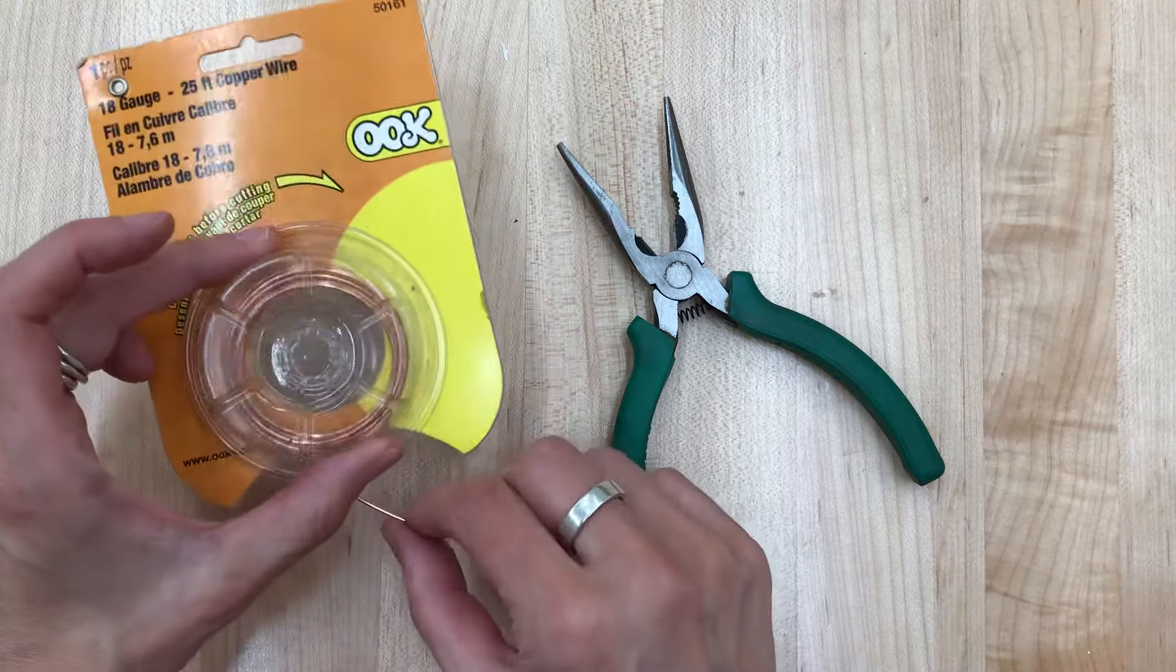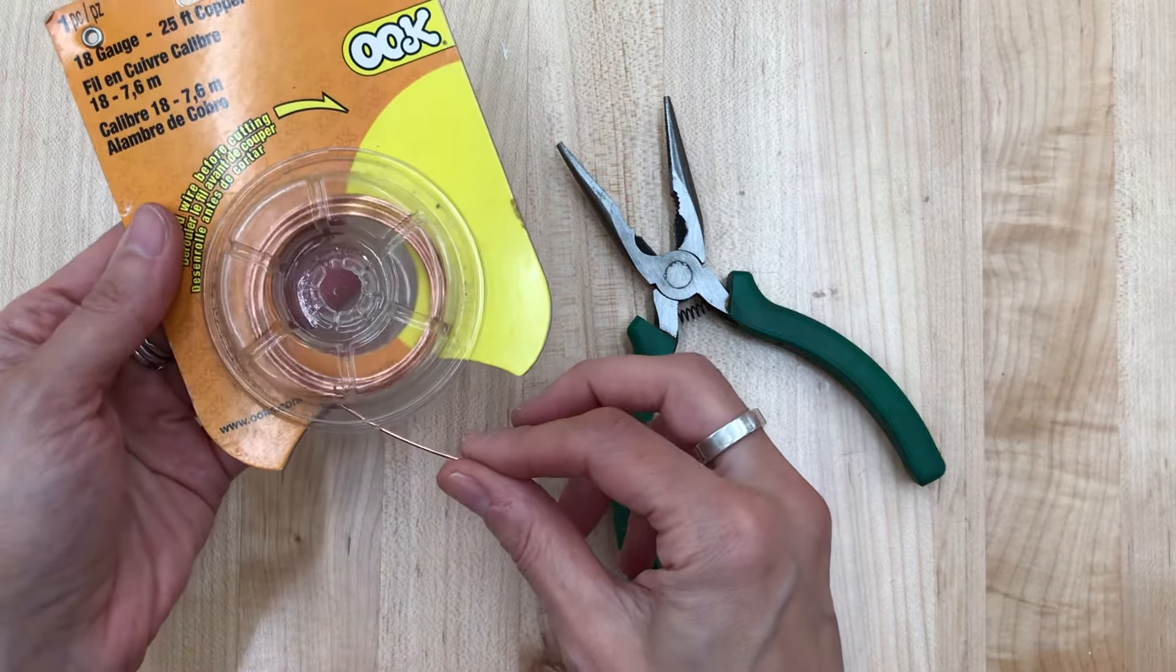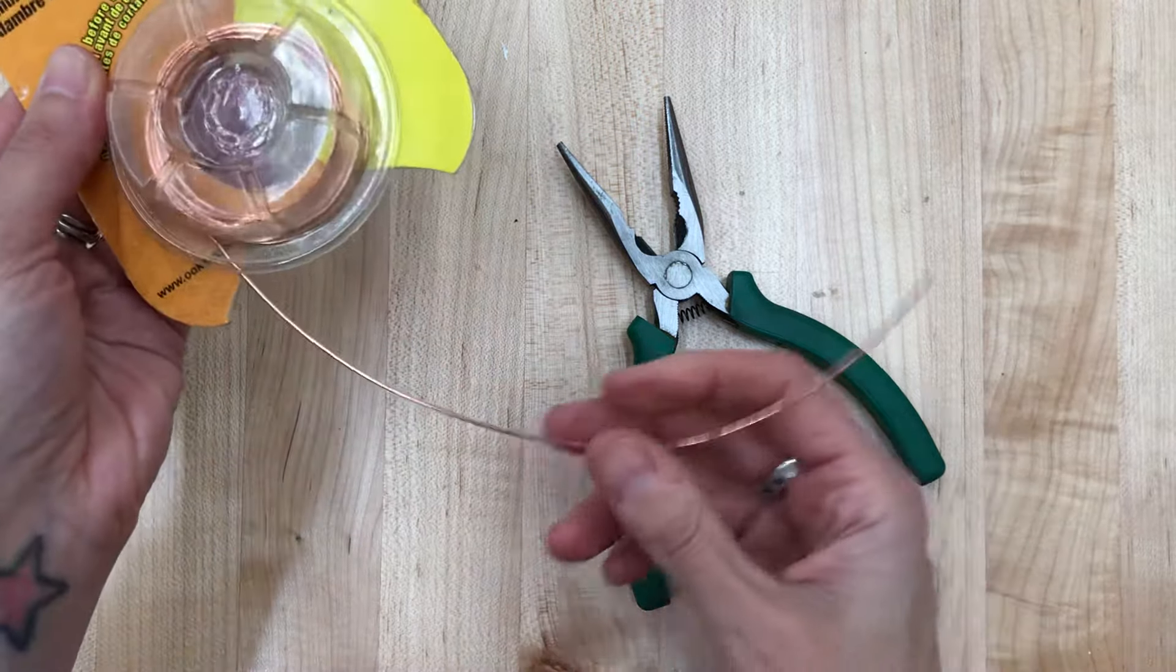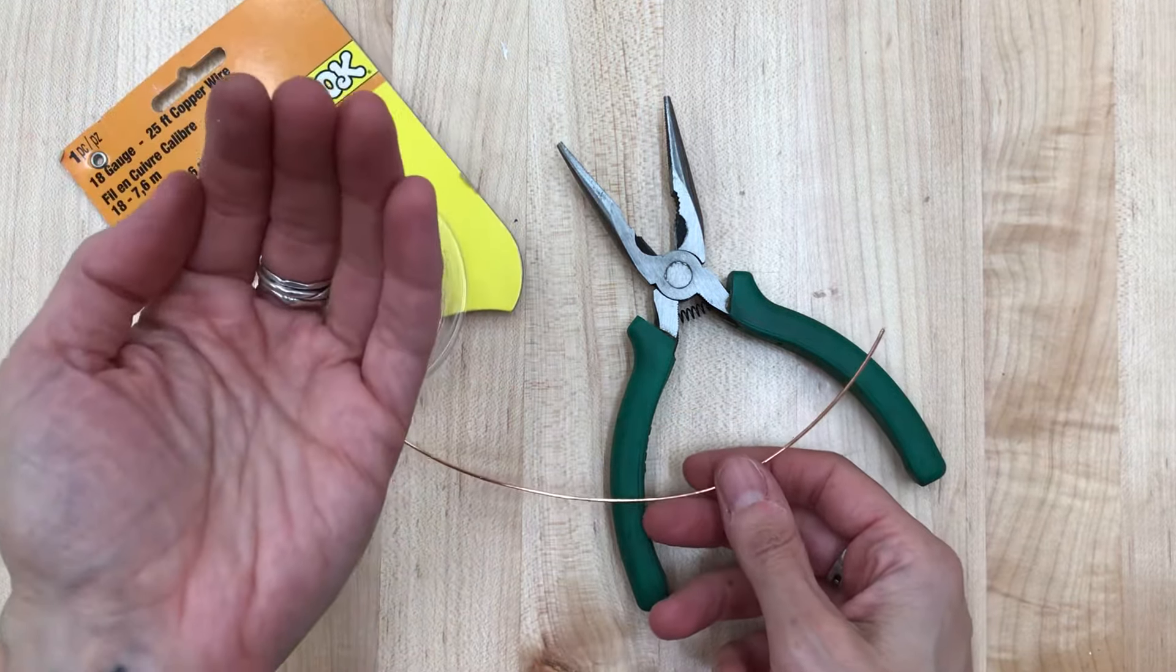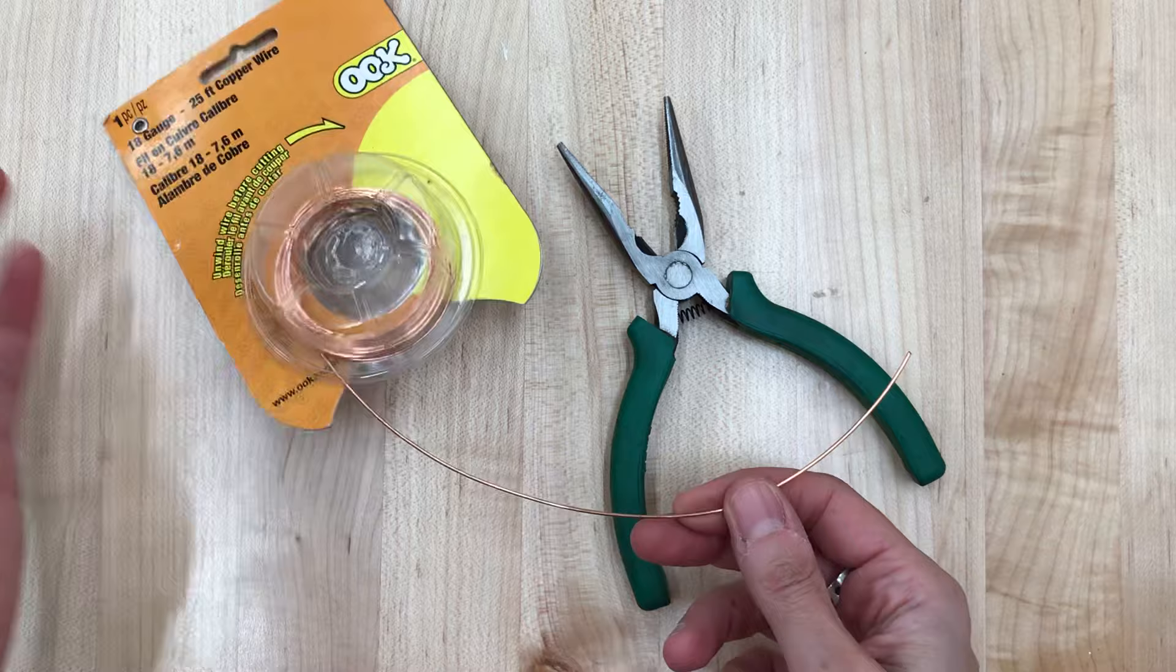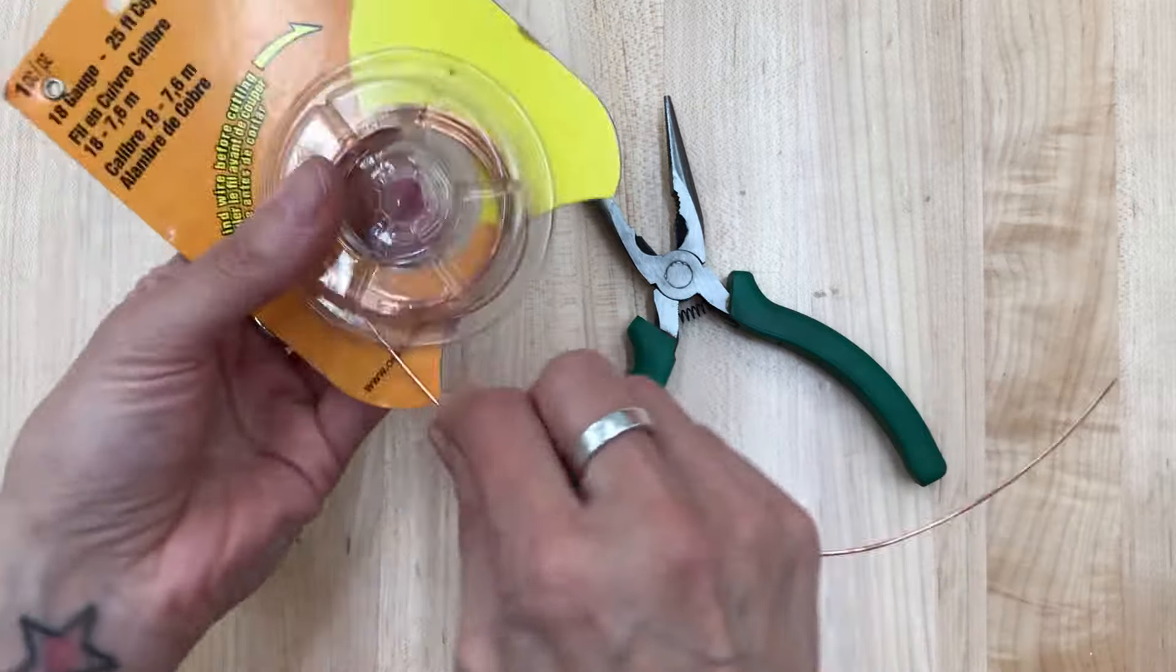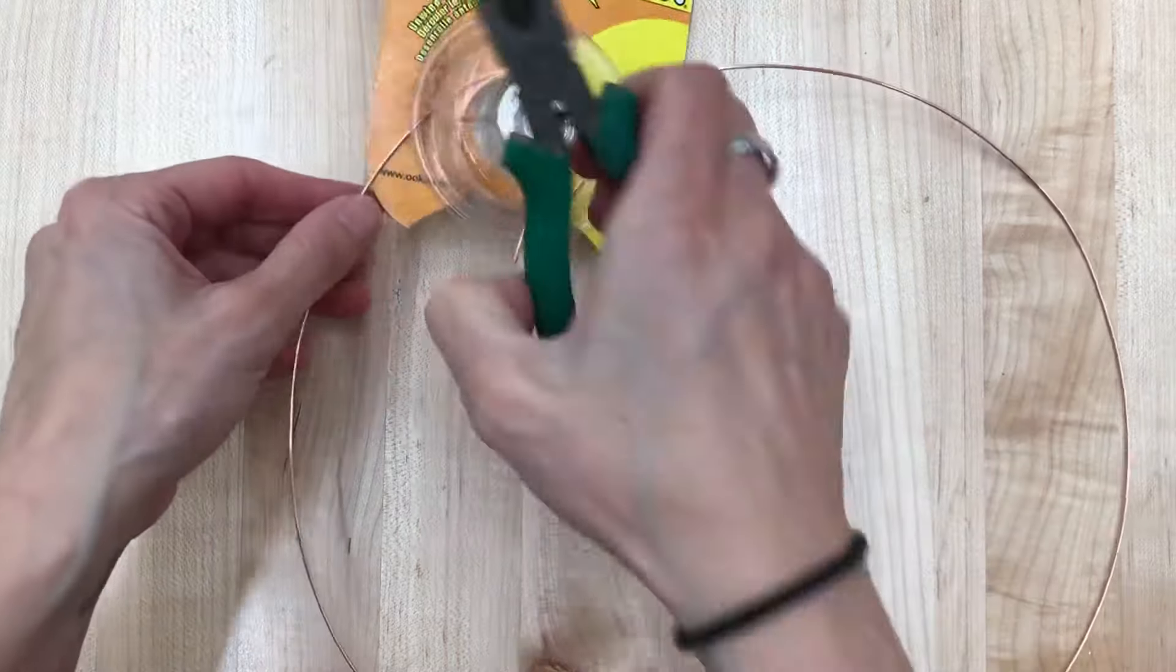So I'm going to go ahead and begin and pull out a length of wire from the spool. And people always ask me, how much should I pull out? And my sometimes annoying answer is I'm not really sure. It's kind of a personal choice, but if you want to make a sphere that is going to fit in the palm of your hand, so about the size of a tangerine or a small orange, I would say start off with something that feels comfortable, about a foot to two feet. You don't want it so long that it's hard to keep track of.